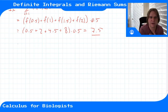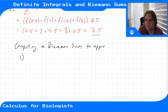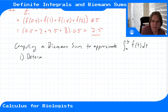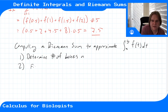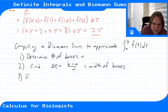So the process for computing a Riemann sum to approximate the integral from a to b of f(t) dt: Step 1 — determine the number of boxes to use, call it n. Step 2 — define delta t, the step size (width of the boxes) as (b − a) / n.